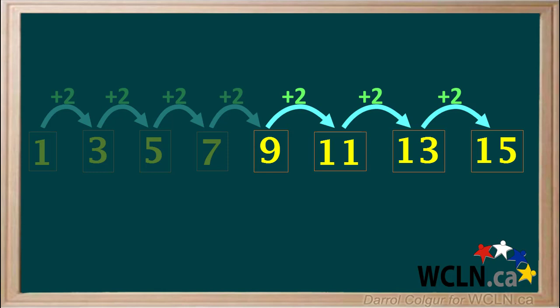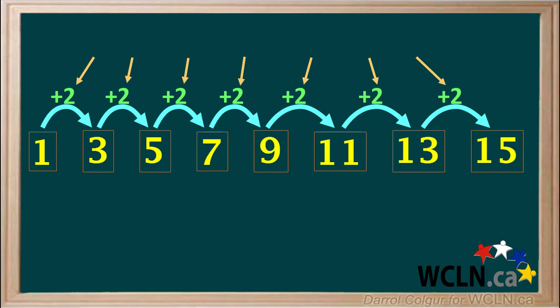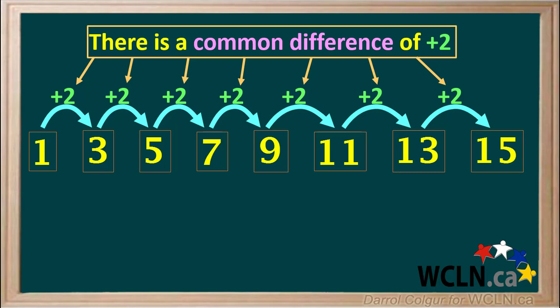Similarly, starting at 9, we add 2 to each number to get the next number. Because we added 2 to each number to get the next number, we say there is a common difference of positive 2 in this set of numbers.